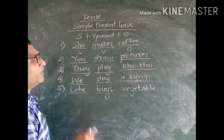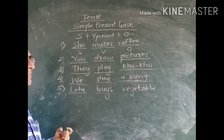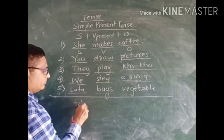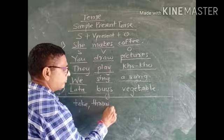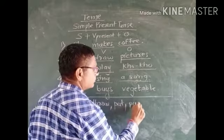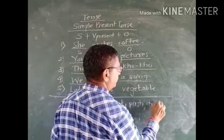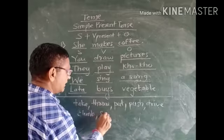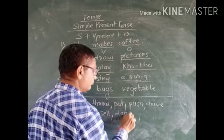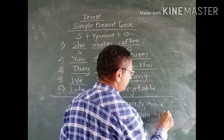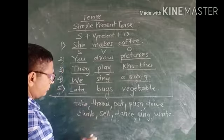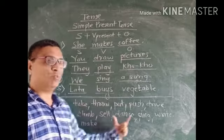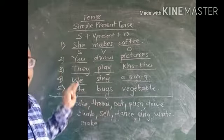In this way you can also write the simple present tense sentences on your own by using these given words: take, throw, put, push, drive, climb, sing, dance, write, etc. Use these verbs and make your own sentences like this. Thank you.